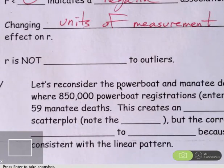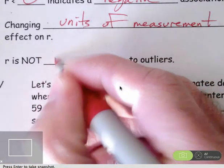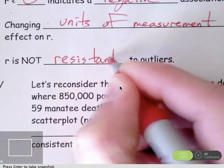Hi there. Let's finish our lesson over correlation. The correlation, R, is not resistant to outliers.